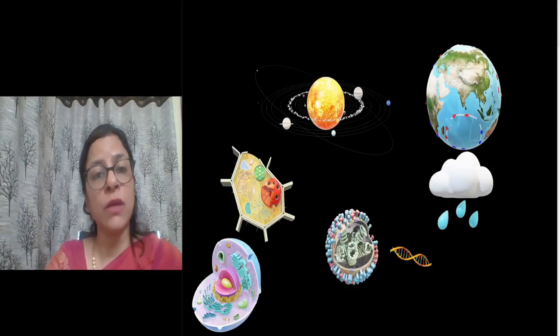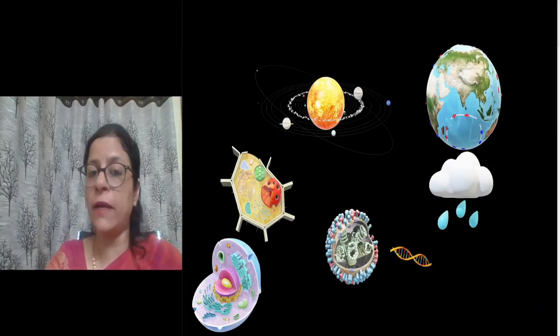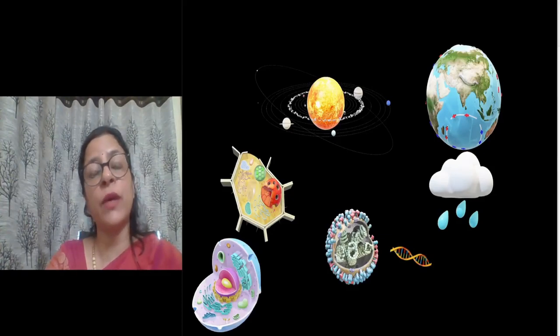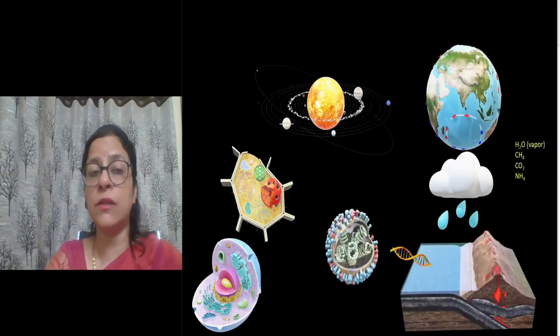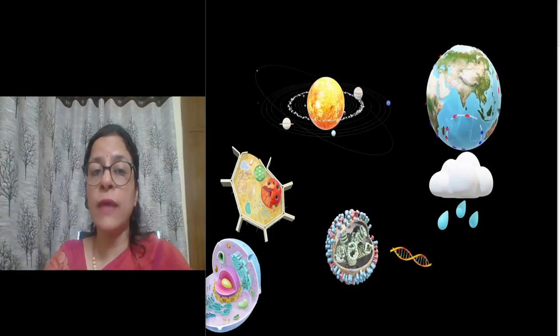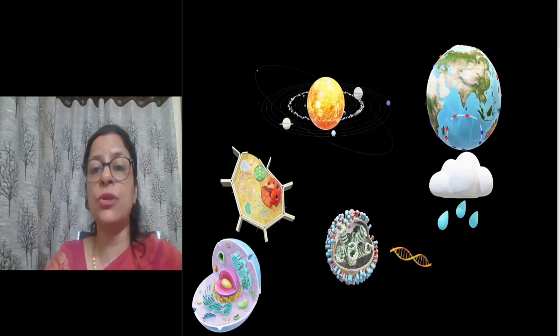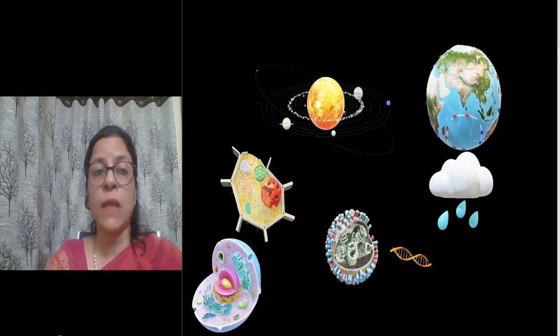The origin of Earth is considered approximately 4.5 billion years ago. Life originated on it around 3.5 billion years ago. The origin of life is a unique event in the history of the universe, and we still don't know how many and which other planets have life on them.